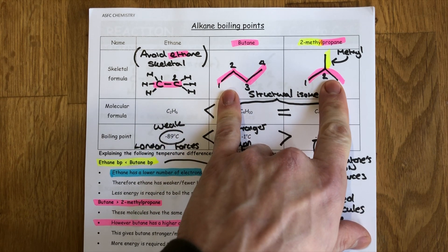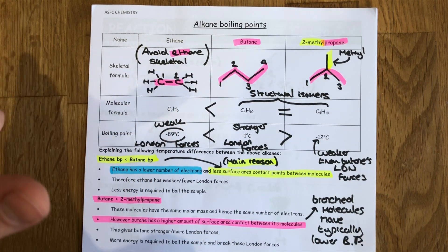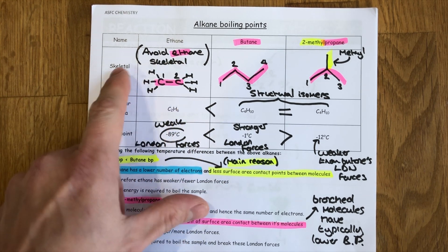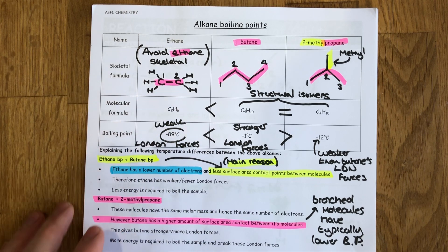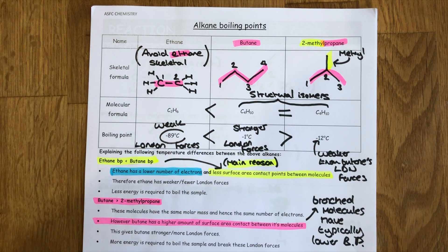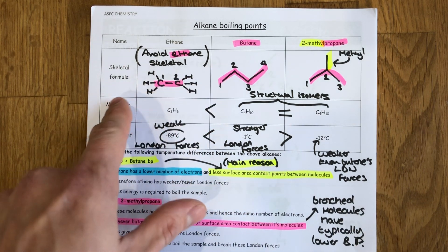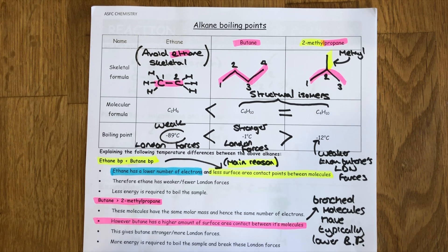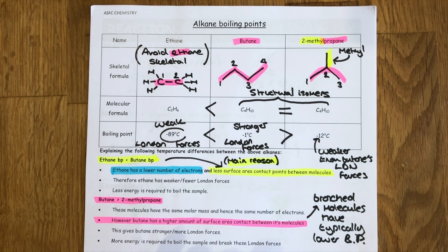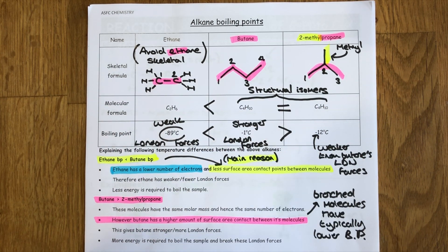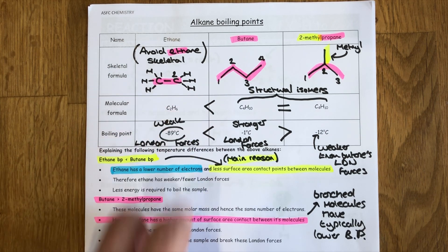These two have got something in common whereas this one is completely different. Butane and two methylpropane I have done in skeletal because they're nice and clear. Ethane in skeletal would effectively just be a slash and so I try and avoid that wherever possible. The relationship between these two is that they are structural isomers which means they've got the same molecular formula but different structural formula.